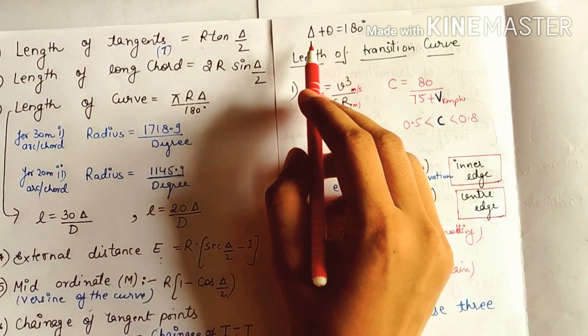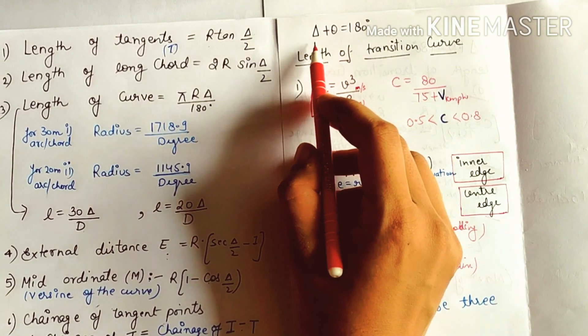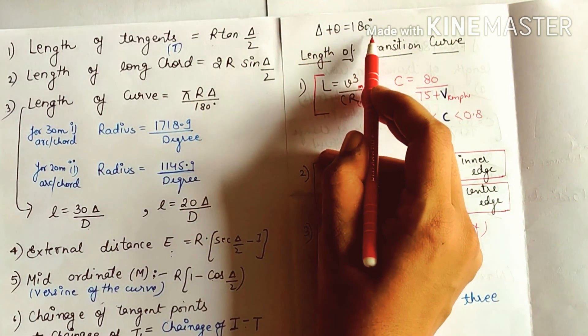Delta plus theta is equal to 180 degrees. Deflection angle plus angle of intersection is equal to 180 degrees.